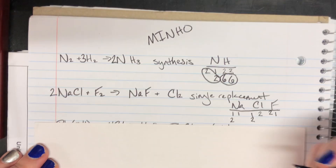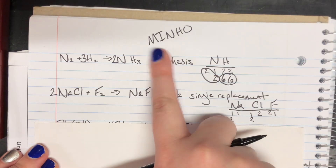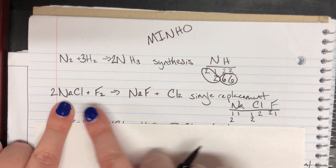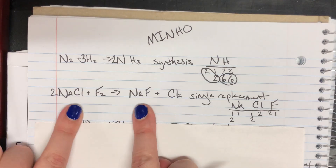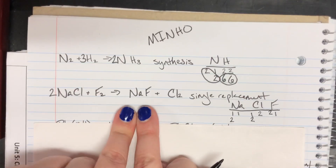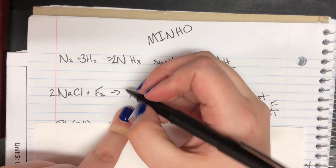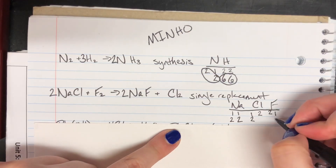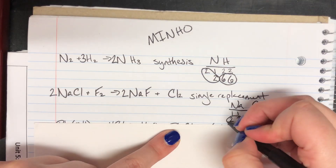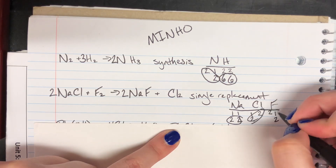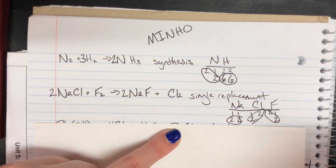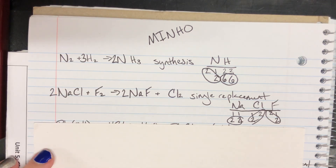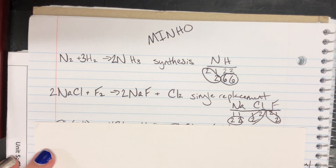Now my sodium count is two. MINHO says I have to pay attention to sodium before I go back to fluorine. But luckily, sodium and fluorine are together, and now both of them need to be multiplied by two to get my counts correct. I'll go ahead and circle my final counts — these are my correct coefficients, making everything balanced.